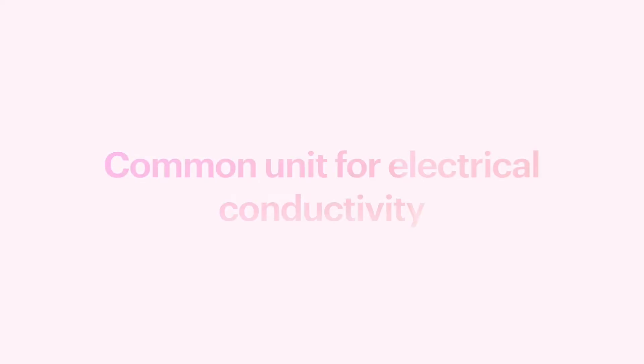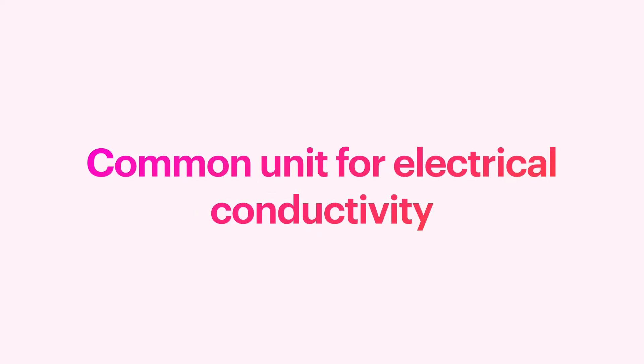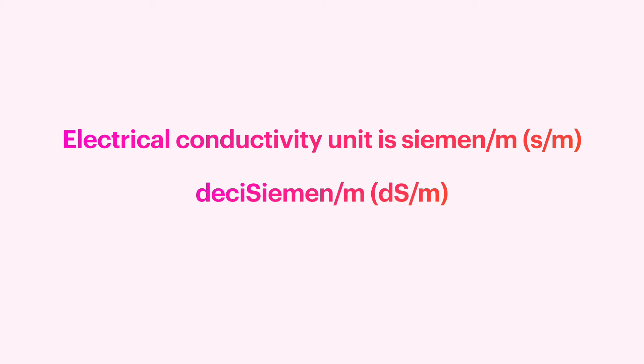Common unit for electrical conductivity: The SI unit for electrical conductance is the siemen. So electrical conductivity unit is siemen per meter. This unit is changed to deci siemen per meter.